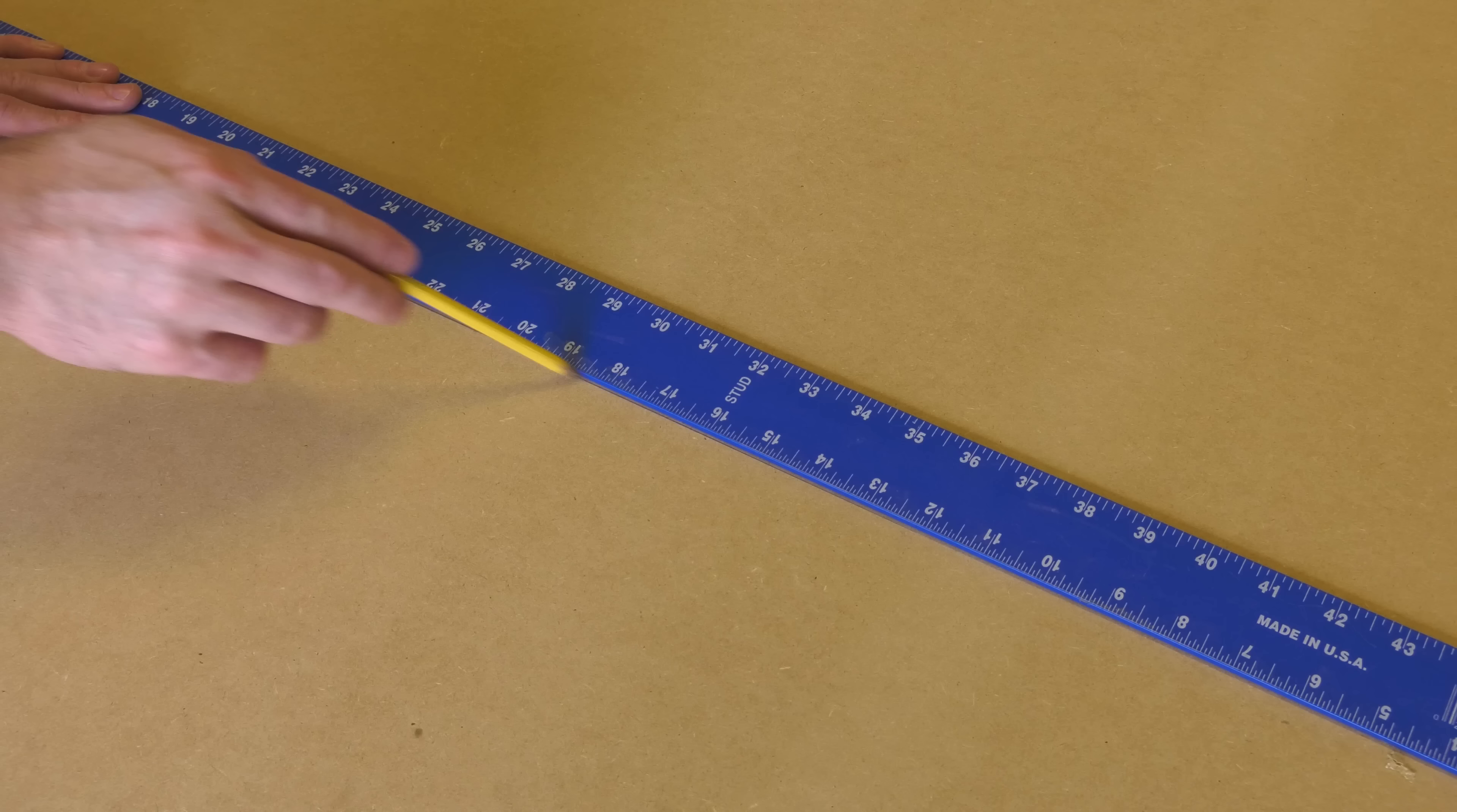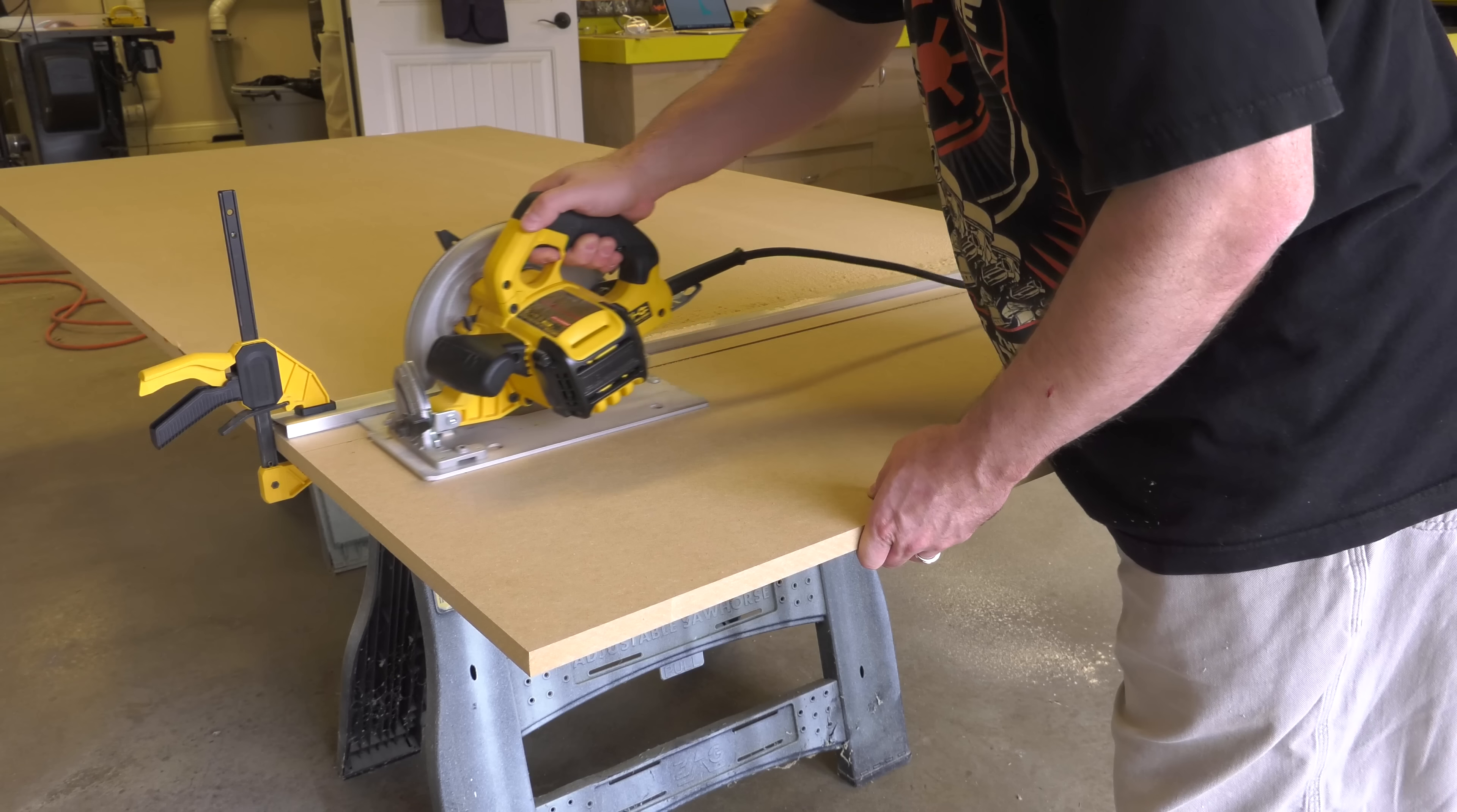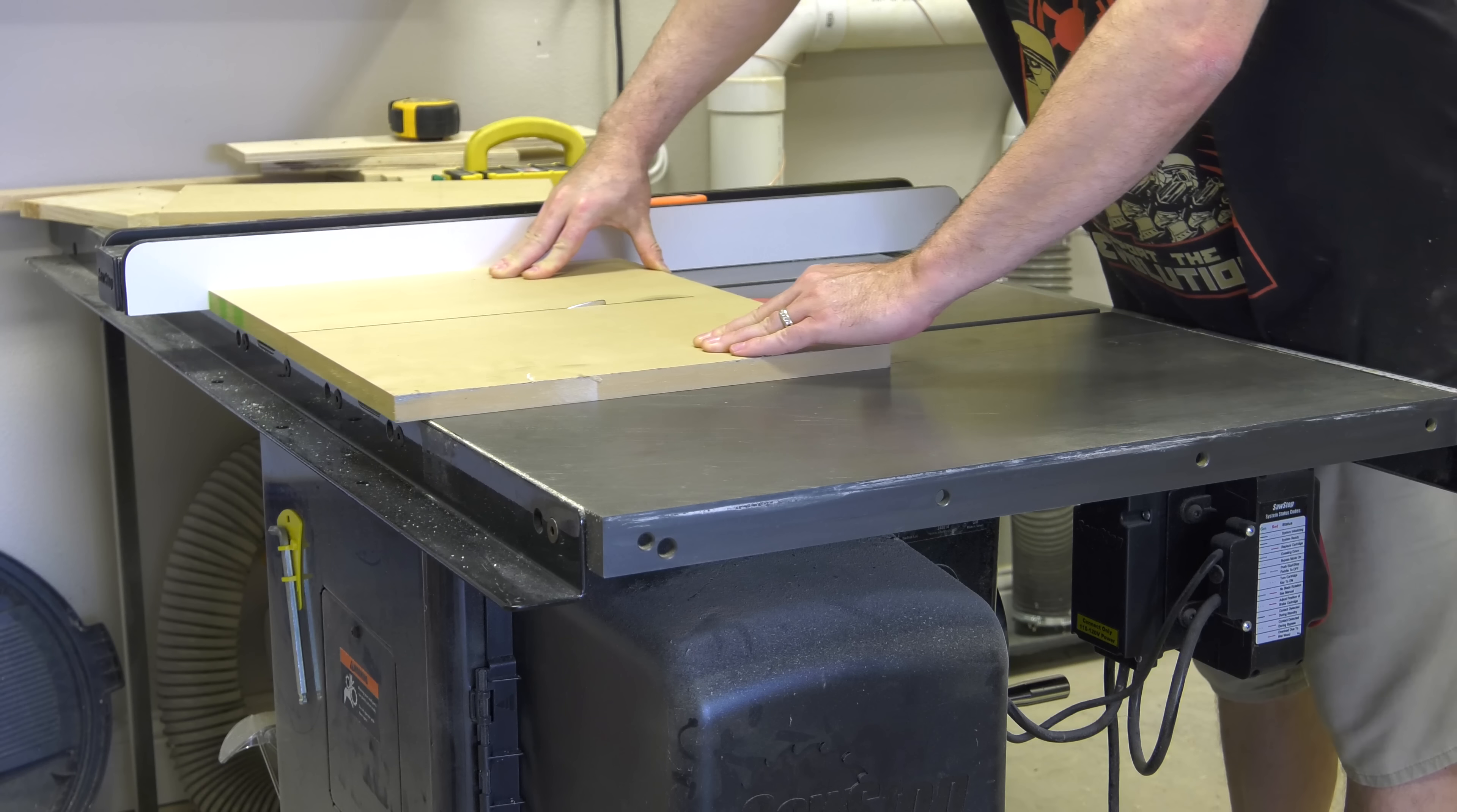I started by marking off a small section of three-quarter inch MDF. I cut it off using a straight edge as a guide and my circular saw. I then cut down all of the sections on my table saw, but there's no reason you couldn't do this with a handheld.